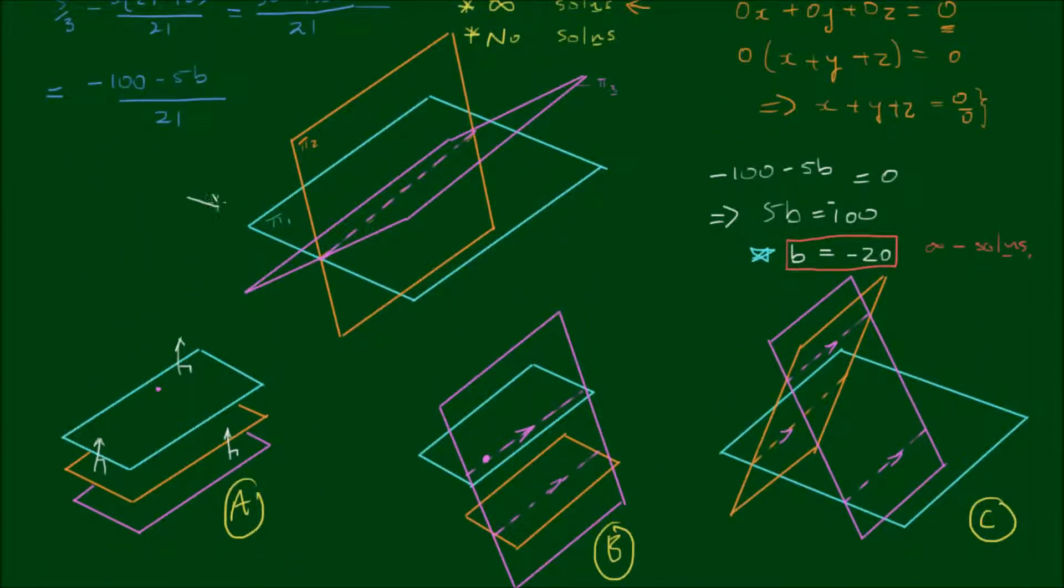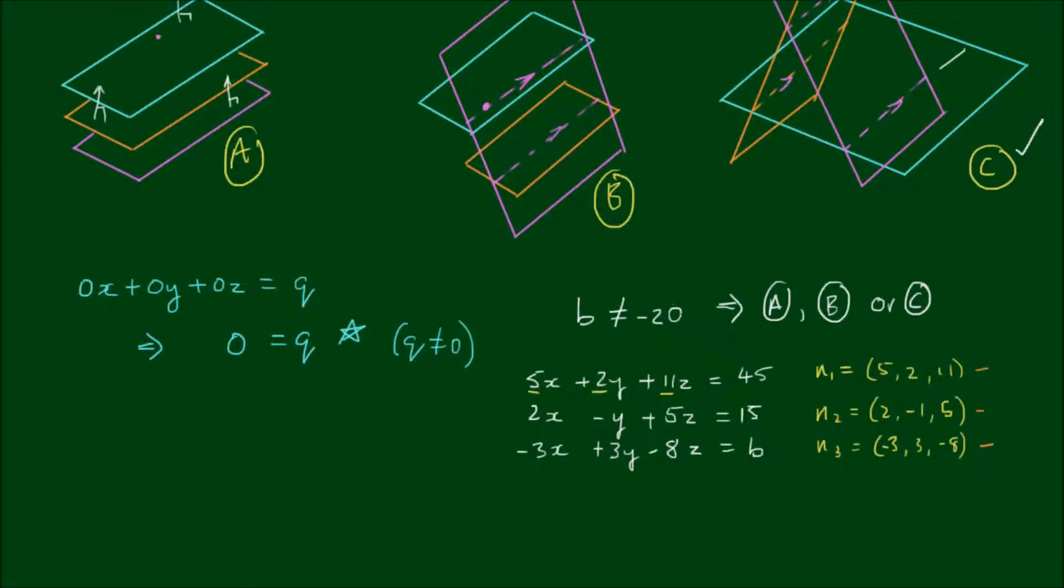Which means they're all pointing in different directions and that makes sense for when B equals negative 20. When we have this scenario and we get infinitely many solutions, when we change the value of B all we're doing is offsetting one of these planes. We're taking it from a common intersection and just offsetting it to form the two other parallel lines. So when B is not equal to negative 20, we're simply moving this one along the direction of its normal to form the other two parallel intersection lines. So the only possible other configuration is C.